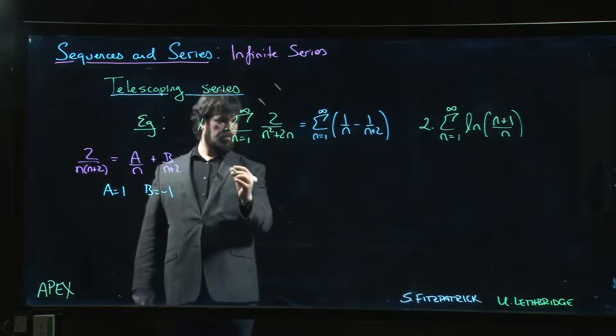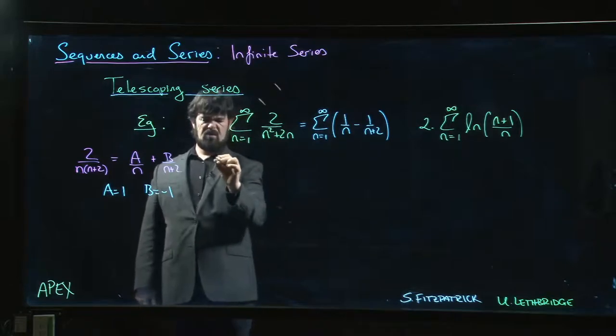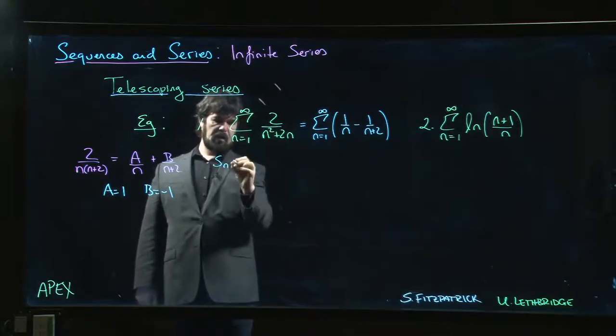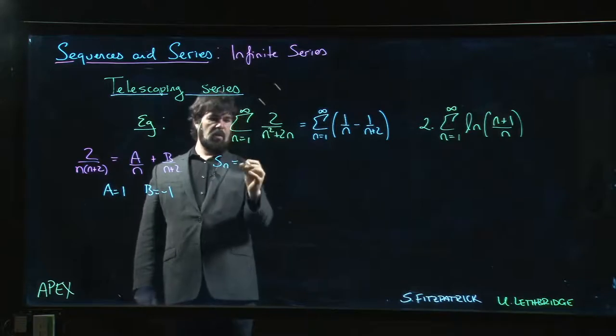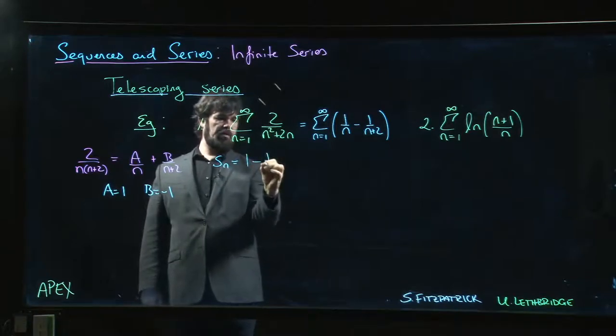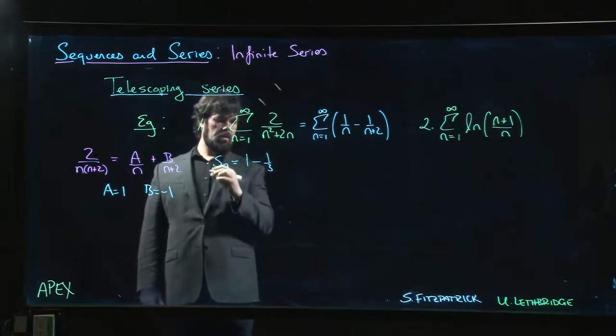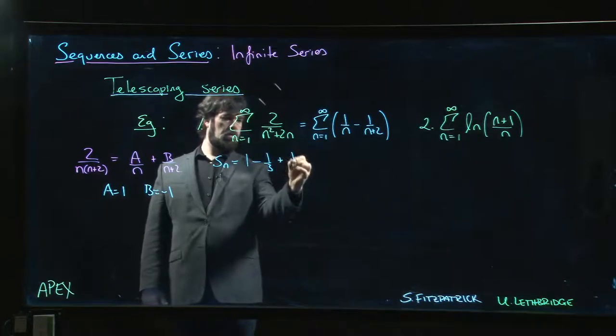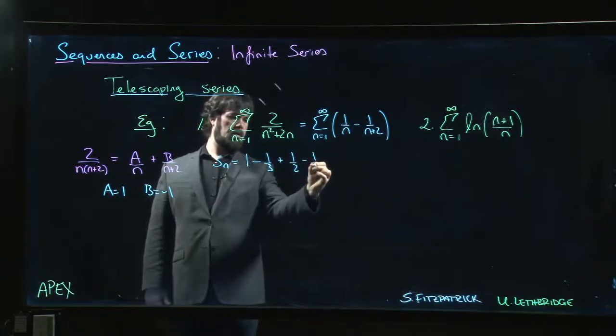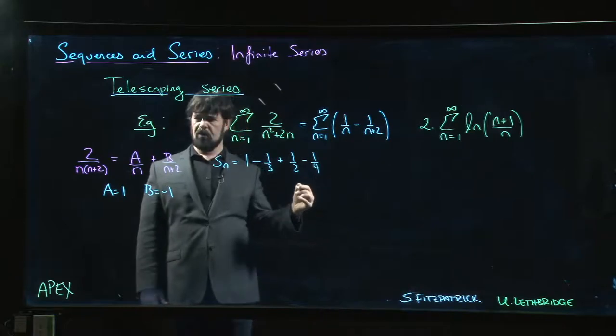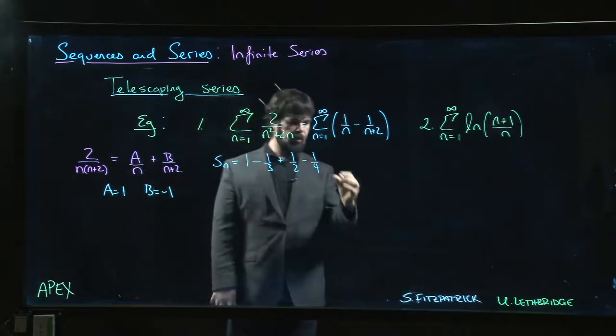So, we have, let's just write a kind of a general one. What is it going to look like? Sn. So, n equals 1. I have 1 minus 1 third. Then, let's go to 2. 1 half minus 1 quarter. Oh, it doesn't look promising, does it?